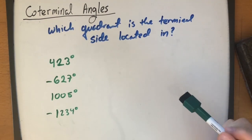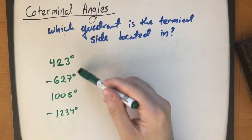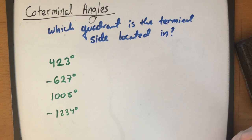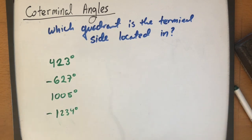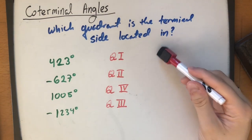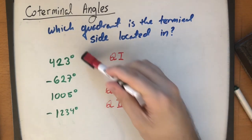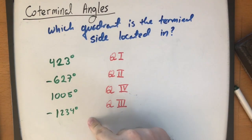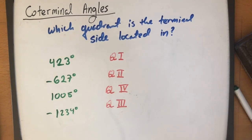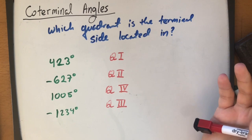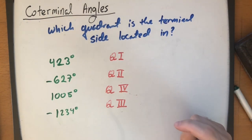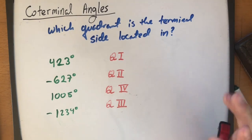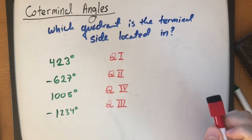Now, given these angles, determine which quadrant the terminal side would be in. Pause the video and try to do it yourself. When you resume, the answers will appear in five seconds. The last one was likely the hardest because you had to keep adding 360 to find the co-terminal angle easiest to identify. That wraps up this video — see you in the next one.